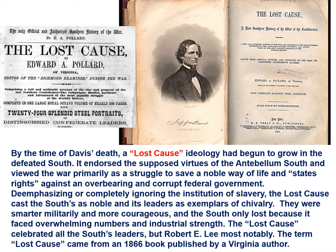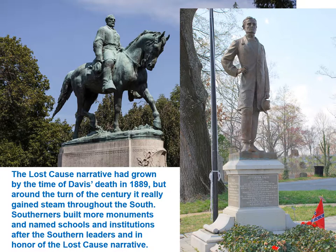The term 'Lost Cause' came from an 1866 book published by a Virginia author. The Lost Cause narrative had begun to grow by Jefferson Davis's death in 1889, but it was around the turn of the century and into the early 1900s that it really gained steam throughout the South. Southerners built more monuments and named schools and institutions after Southern leaders in honor of the Southern cause narrative. This concludes the video on the end of the war in 1865.